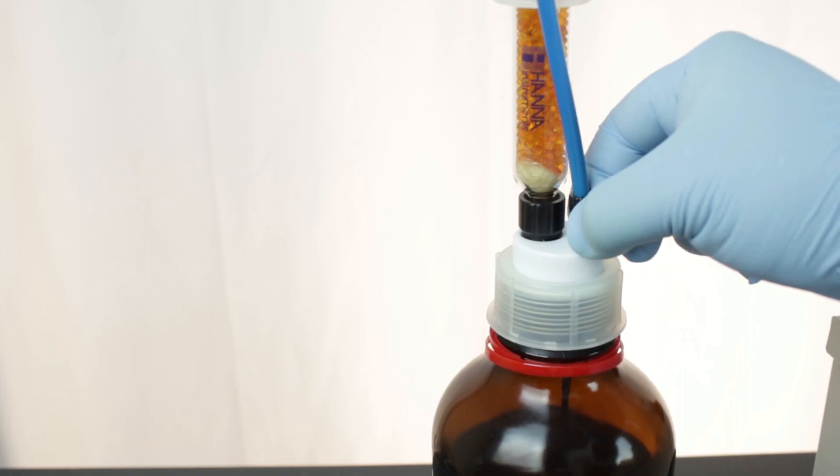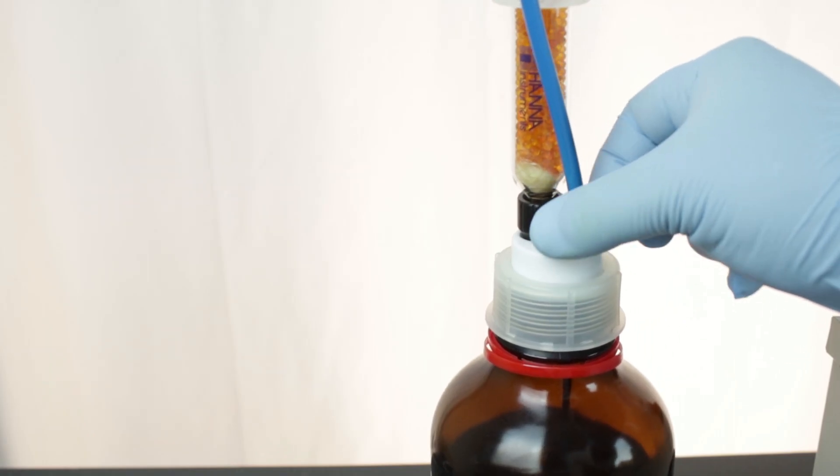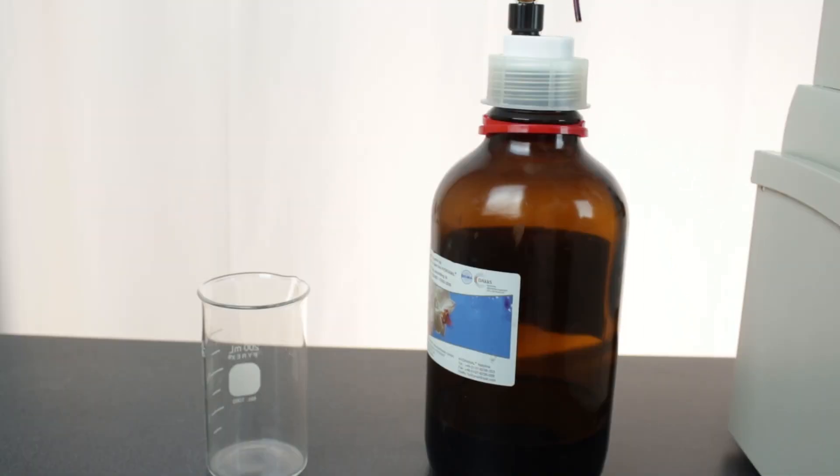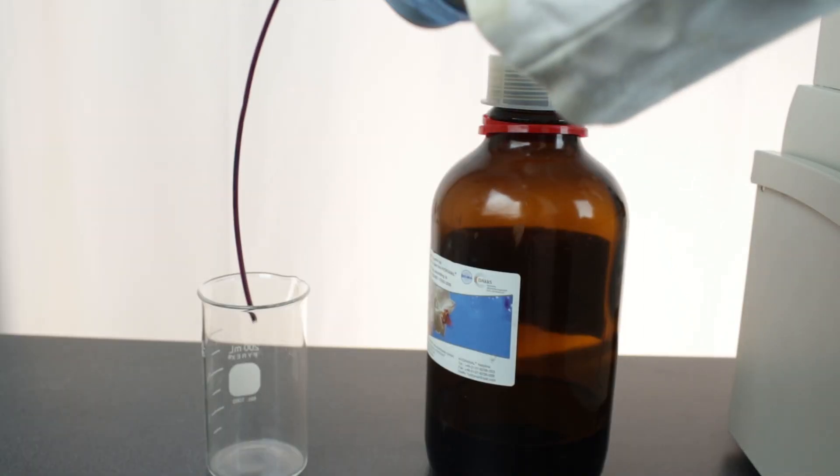Before we start, we need to make sure that there is no titrant in the syringe or tubes. Remove the aspiration tubing from the titrant bottle and place the tip in an empty beaker. We do this to aspirate air through the tubing which cleans out any excess titrant.